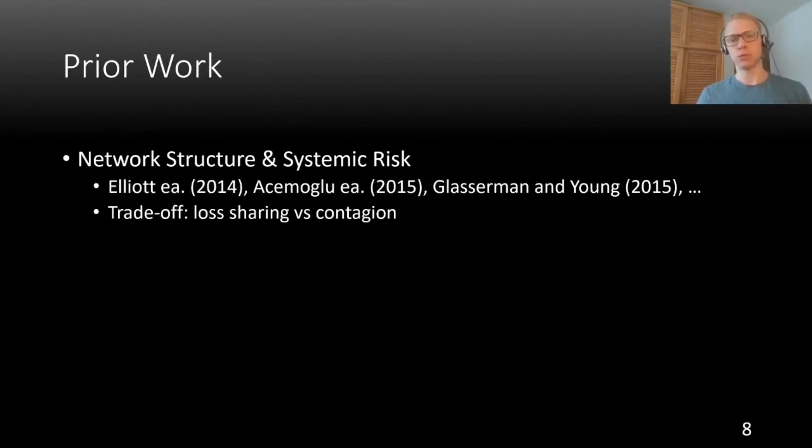If you study the work on network structure and systemic risk, of which there is quite a lot, what you always see is that there tends to be a trade-off created by a financial network. On the one hand, banks that are interconnected in a network share losses, and this can make a financial system safer. On the other hand, a financial network also creates a possibility for contagion. But in particular, having less of a network is not always better.